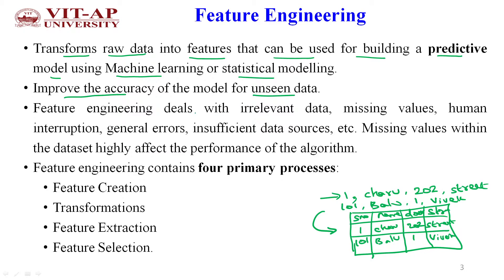Feature engineering deals with irrelevant data, missing values, human interruption, general errors, and insufficient data sources. Missing values within the dataset highly affect the performance of the model. Feature engineering contains four primary processes.